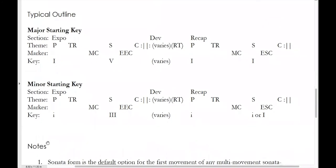To put all of this into picture form, here's the typical outline of how this works together in the course of an entire sonata movement. We have our three main sections: our exposition, our development, and a recapitulation. Within the exposition, we have our four thematic areas: the primary theme, the transition, the secondary theme, and the closing theme. We can see that the primary theme and at least the first part of the transition are typically in tonic. The transition drives to the medial caesura, the MC.